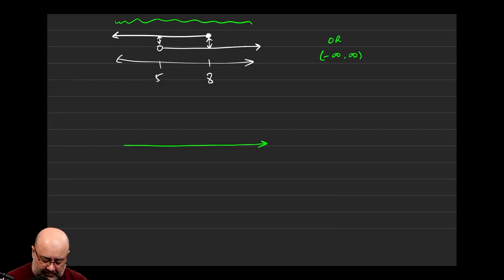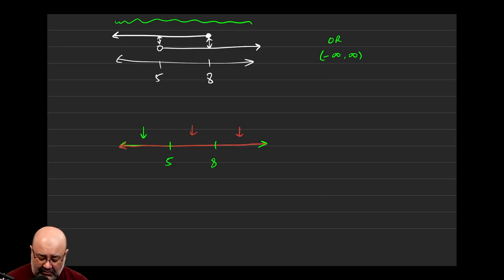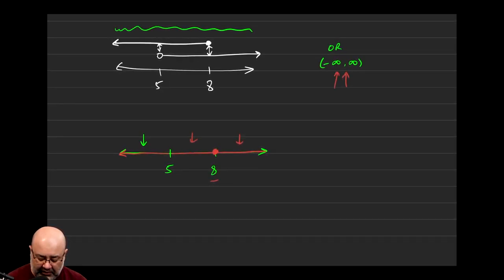How would we graph that? The points of interest are 5 and 8. Does the solution include the region to the left? Yes, so I shade it. Does the solution contain the middle region? Yes, because the solution is negative infinity to infinity — every number is a solution, so that region is shaded. Does the solution contain the region to the right? Yes. Does the final solution contain the number 8? Yes, because 8 is in that interval, so I'd make a solid dot at 8. Does the final answer include the number 5? Yes, because 5 is also in that interval — all numbers are solutions, so I indicate that with a solid dot.